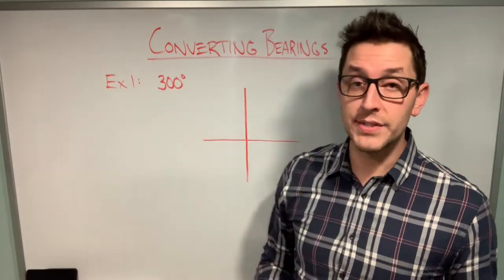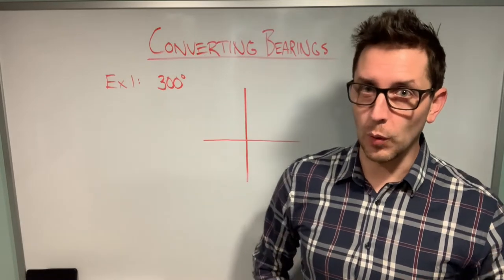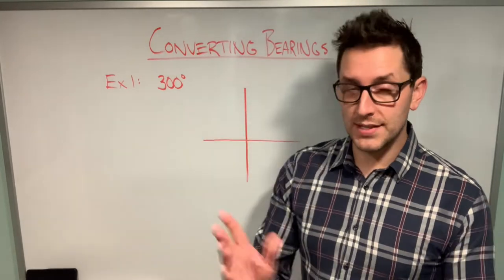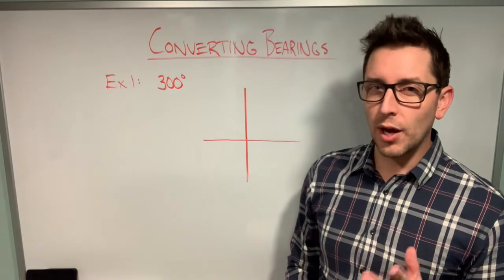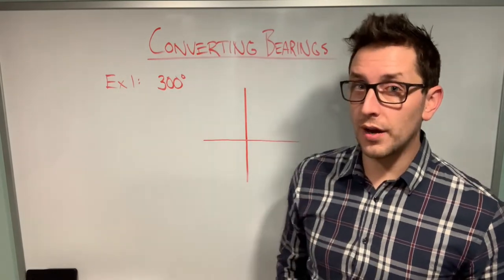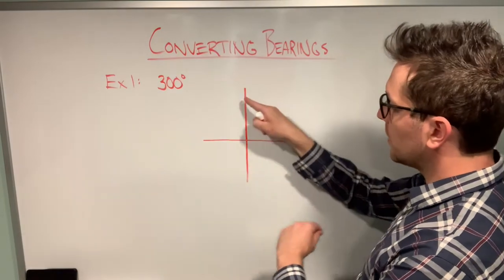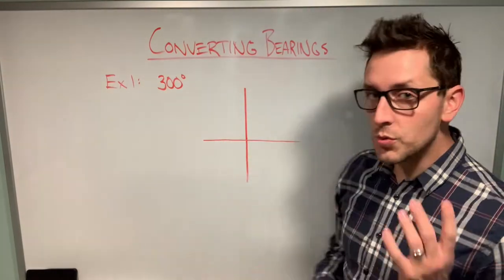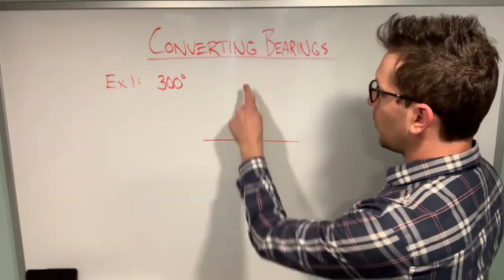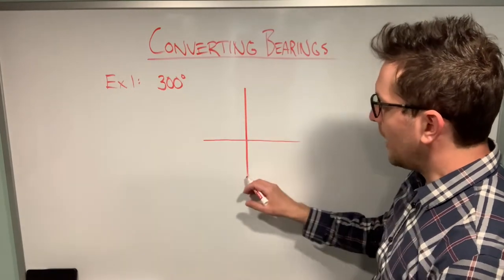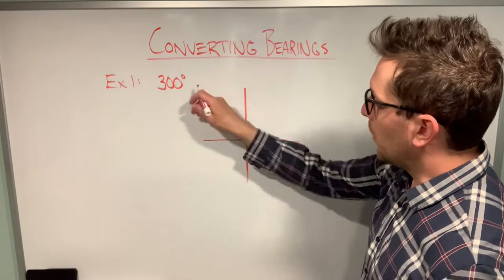Now let's look at how to convert between the two forms. Given a true bearing of 300 degrees, I know it's a true bearing because there are no N/E/S/W letters. It always helps to start by drawing a diagram. With true bearings, we start on the northern axis and rotate clockwise — each quadrant is 90 degrees. For 300 degrees, I rotate past 90, past 180, past 270, landing up in the fourth quadrant.